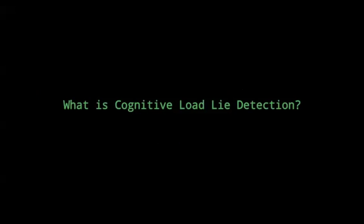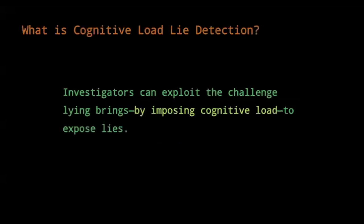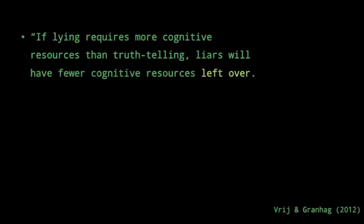So what is cognitive load lie detection? The idea is essentially this hypothesis: investigators can exploit the challenge lying brings by imposing cognitive load to expose lies. Investigators can impose cognitive load using various interviewing techniques that make answering a question challenging. Some of these interviewing techniques or recommendations include asking folks to report something in reverse temporal order, as opposed to the natural forward order, or by asking people unanticipated questions, or simply asking people to provide more information on some topic.